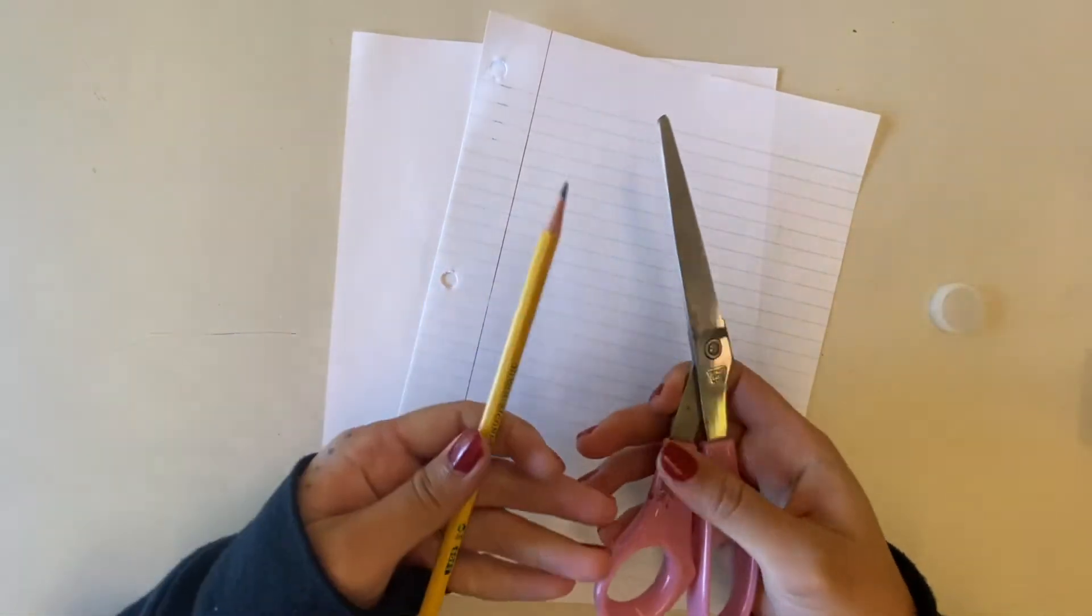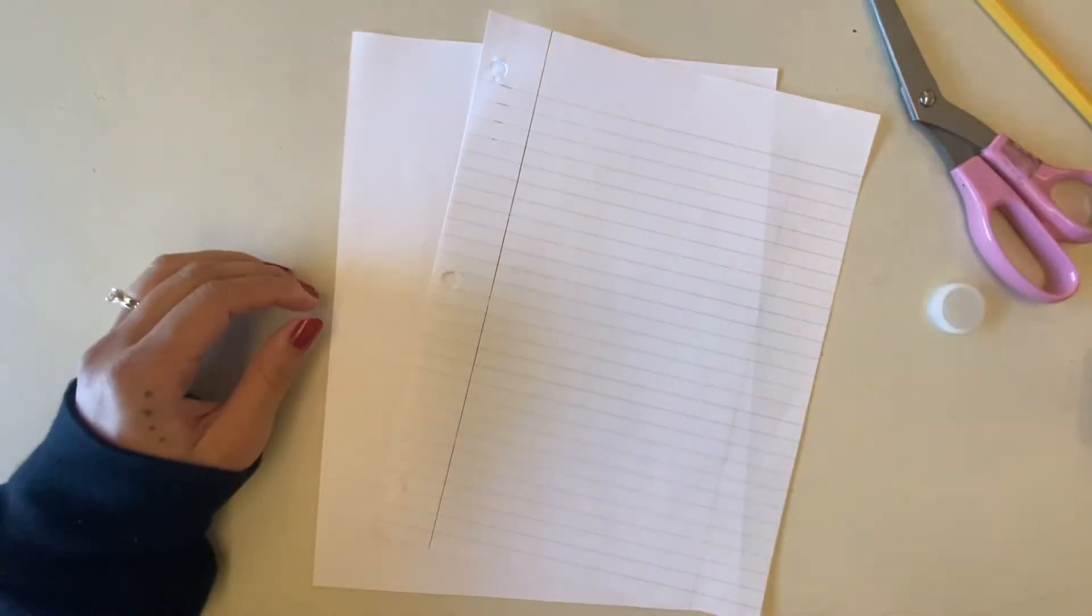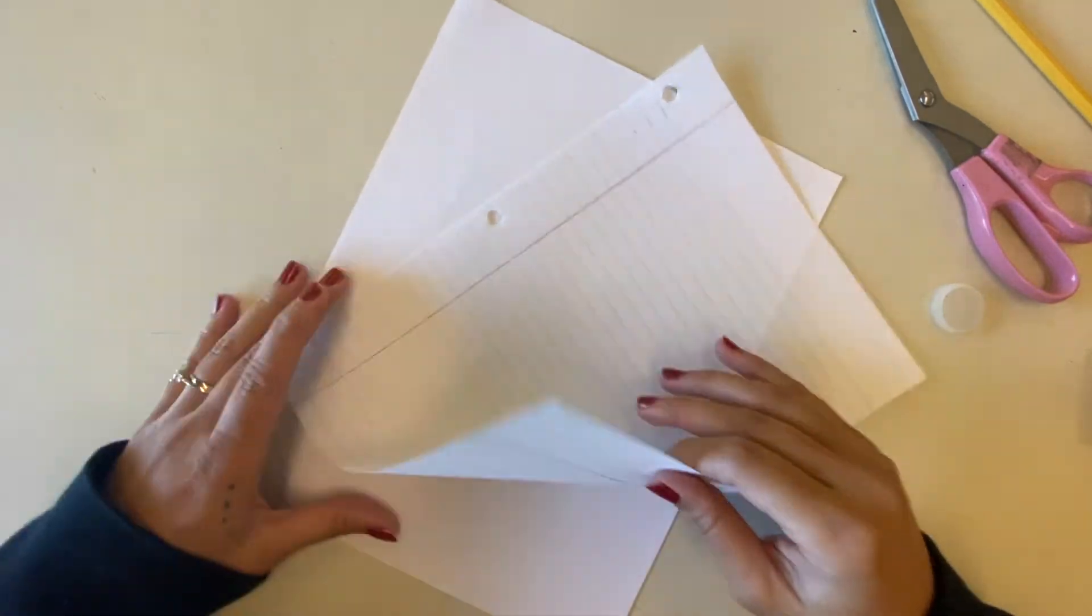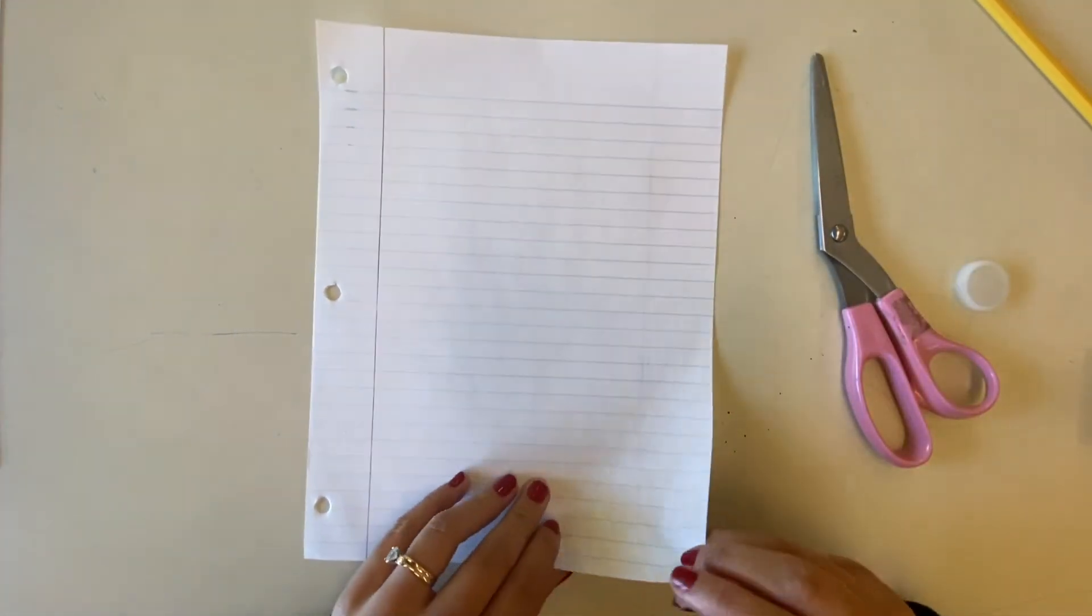To create your radial symmetry drawing, you'll need a piece of paper, I have a water bottle cap, scissors, and a pencil. The first step is going to be to turn your rectangular paper into a square. I'll show you how to do that with scissors, and I'll also show you how to do it if you don't have scissors.